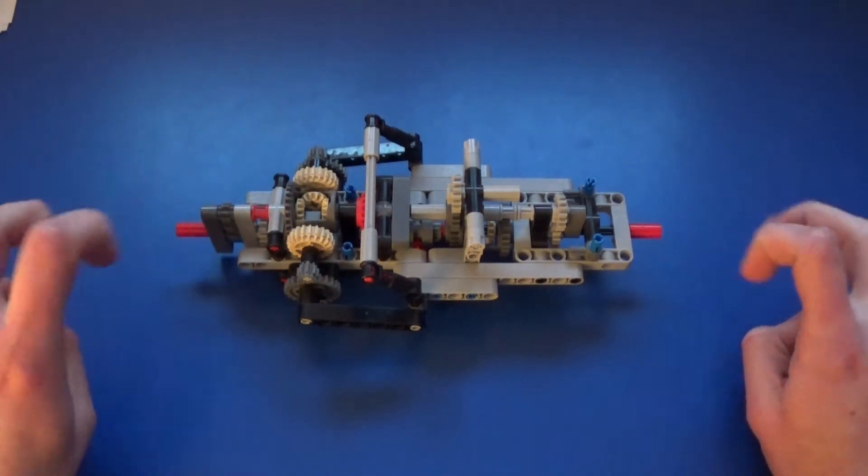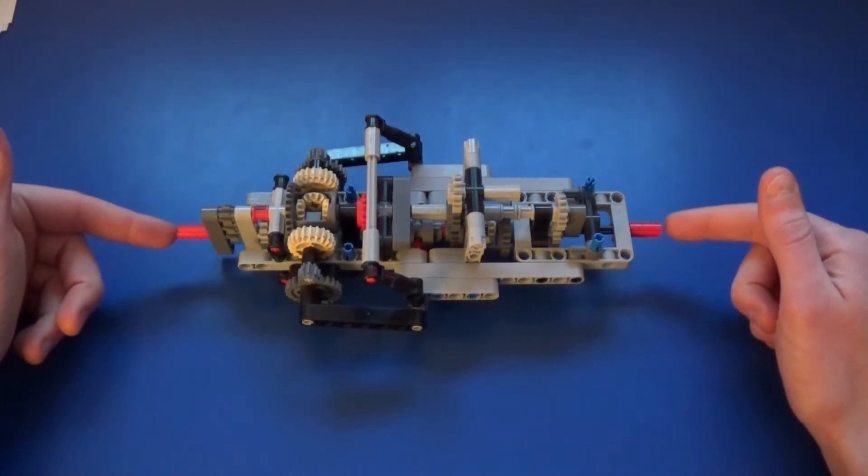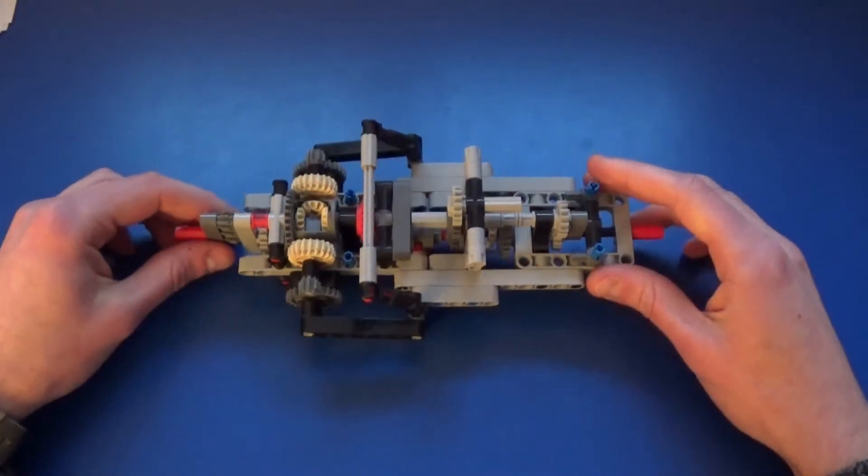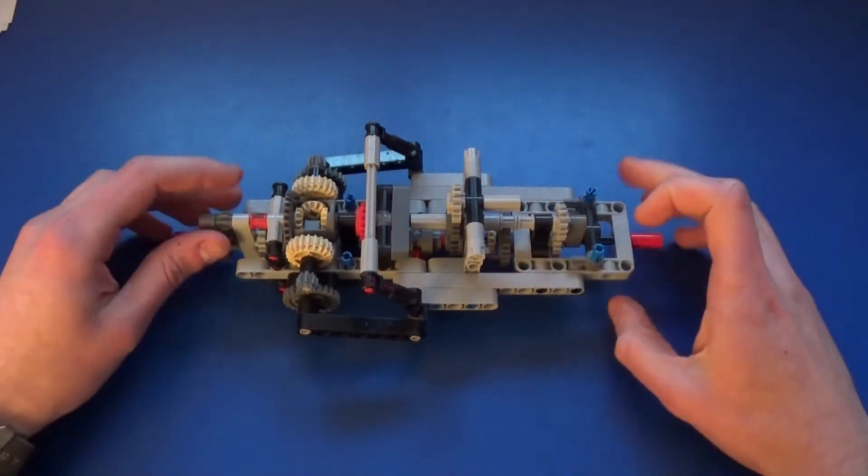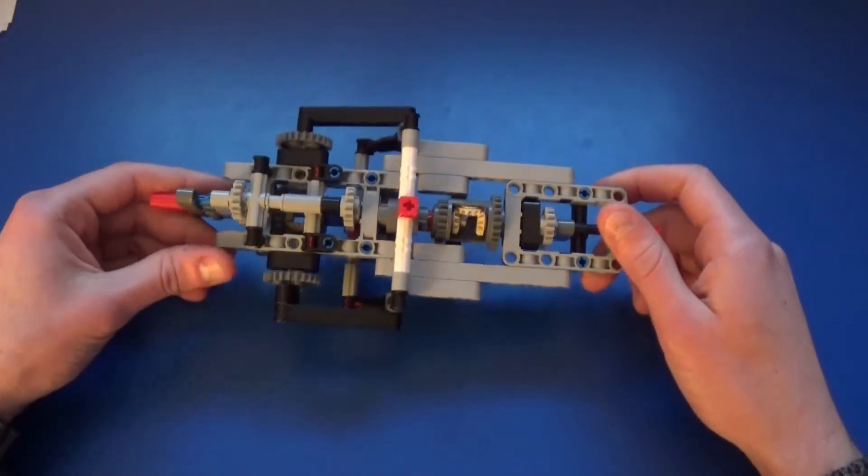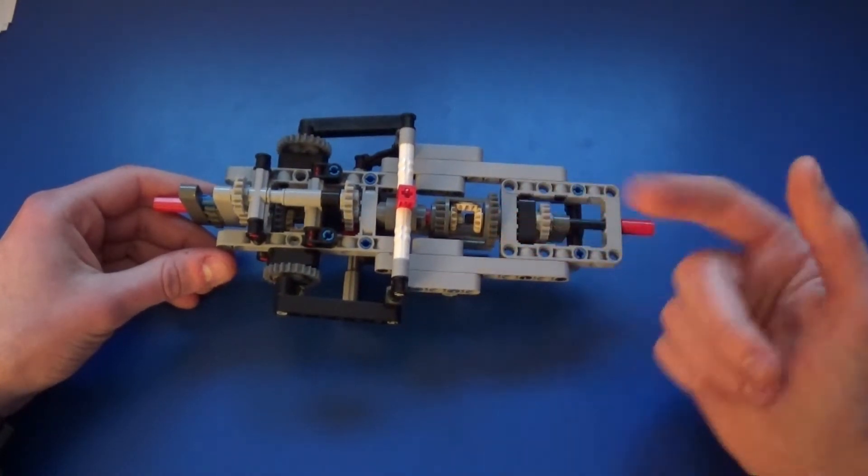The way that it detects wheel spin is by looking at the difference in speed of the two shafts. So let's begin. You might see that there are two differentials here - there's one here and one here. The actual differential that we're locking is this one down here. This is the effective driving differential for the vehicle.